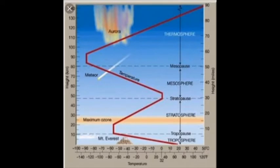If you go into the Earth's crust, the temperature increases — by around 3 degrees Celsius per 100 meters you go down.